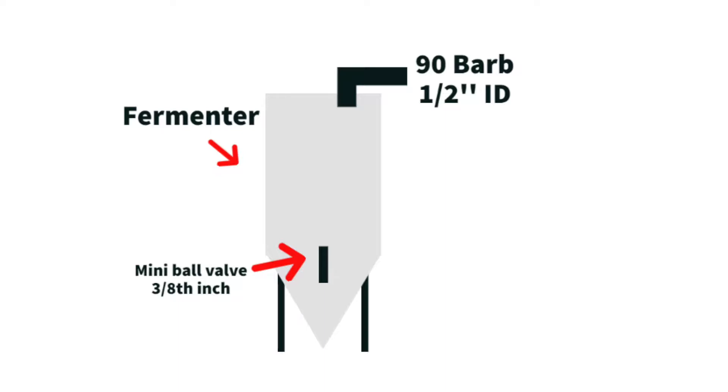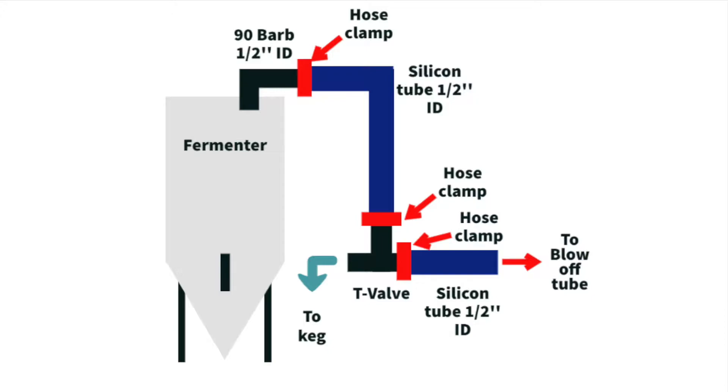To start, what we'll look at is the fermenter. In this specific fermenter, we're going to install a 90-degree barb that has a half-inch inner diameter to connect to silicon tubing. At the bottom of the fermenter is a mini ball valve that's 3/8 inch. Next we're going to attach to the 90-degree barb valve the silicon tubing that's a half-inch inner diameter and we'll clamp that at one end.